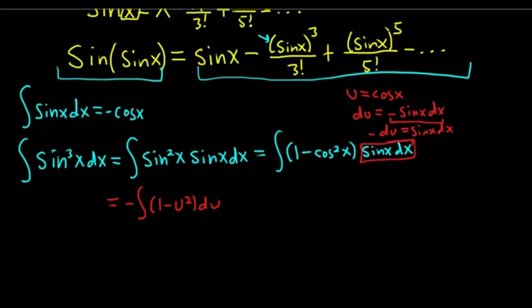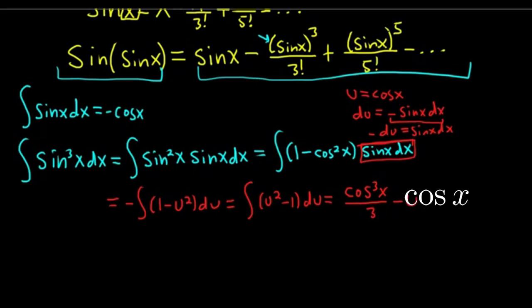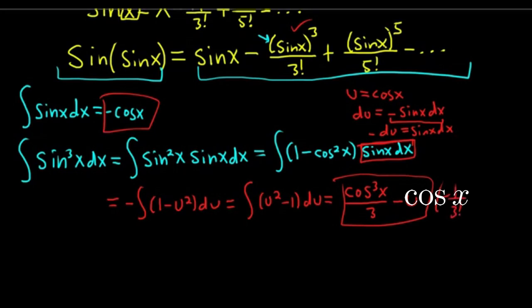We let u equal cosine x, so du equals negative sine x dx, which means negative du equals sine x dx. Substituting, we get negative integral of (1 minus u squared) du. Distributing the negative, that's the integral of (u squared minus 1) du. Using the power rule: cosine cubed x over 3 minus cosine x. I'll box this result and remember there's a negative 1 over 3 factorial factor to add later.